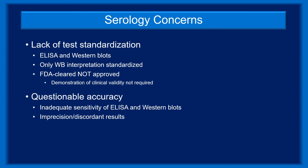Several concerns regarding serology have been raised. While the CDC criteria have standardized Western blot interpretation, the procedures for creating and performing ELISAs and Western blots have not been standardized. Of the more than 70 ELISA and Western blot tests sold in the U.S., none are FDA approved — they were merely FDA cleared. Approved tests need to demonstrate clinical validity, but cleared tests only need to demonstrate that they're comparable to what's on the market. More importantly, the accuracy of serologic testing is questionable and likely insufficient for clinical use. ELISAs and Western blots are not as sensitive as they should be, and their results tend to be imprecise — results on the same specimen are often discordant.